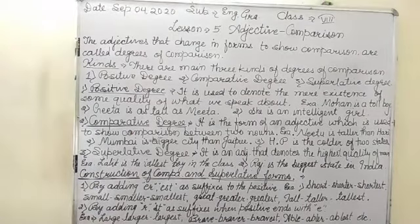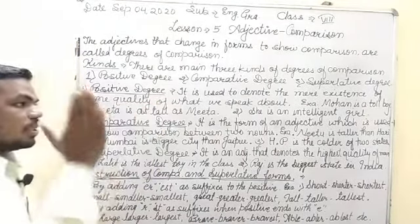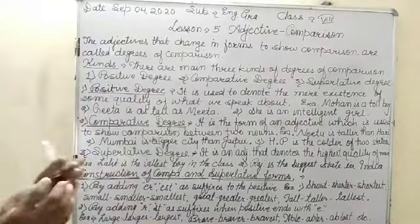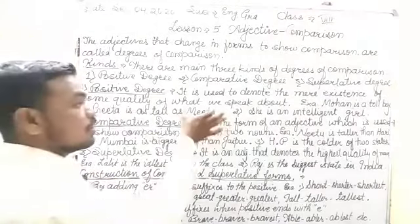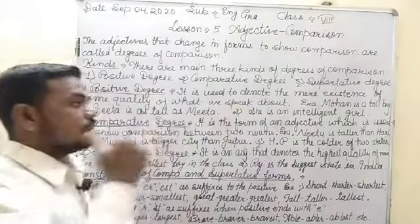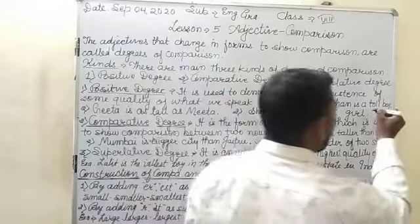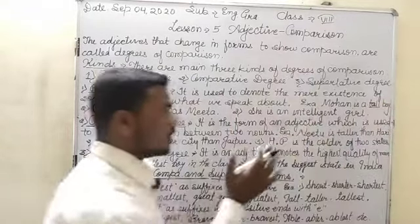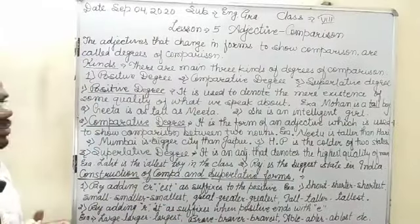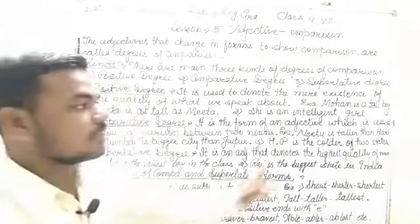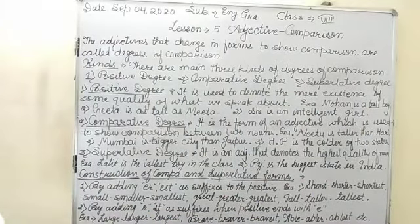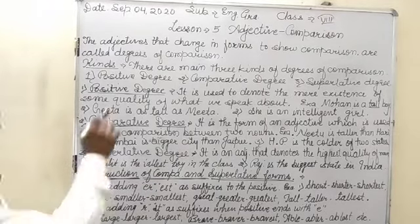Positive degree is used to denote the mere existence of some quality of what we speak about. In positive degree we denote only the mere existence of some quality of any noun — just like 'Mohan is a tall boy.' It is the mere quality of Mohan that he is a tall boy, with no comparison to another person.